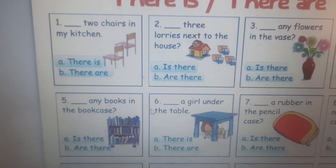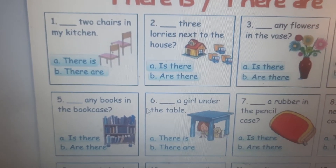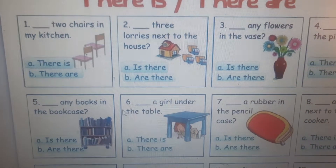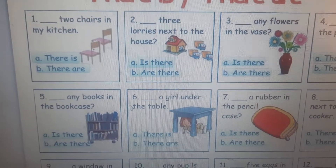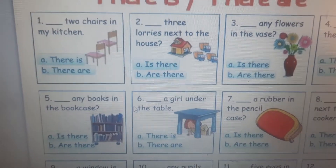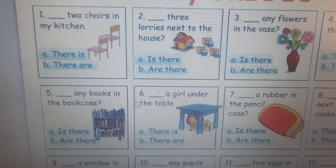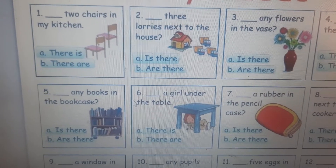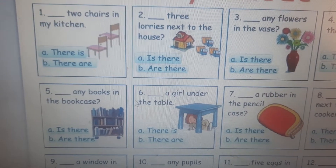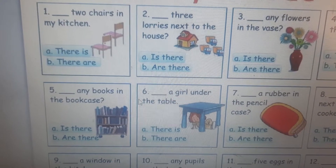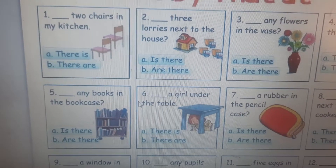Now let's go to picture number three. Any flowers in the vase? Is there any flowers or are there any flowers? There are one, two, three, four, five — more than one. So we'll use 'are there'. Are there any flowers in the vase? Yes, there are.